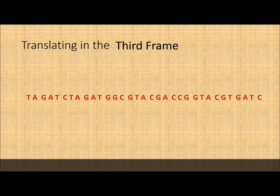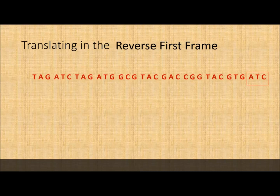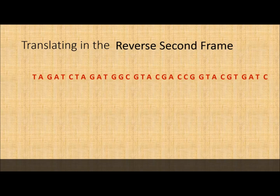Continuing from GAT, CTA, GTA, etc. Remember, the Translate resource also gives you a translation in the reverse direction — five prime to three prime and three prime to five prime. Looking at the reverse first frame, it translates accordingly. In the reverse second frame, you go from three prime to five prime, and the first C gets ignored.